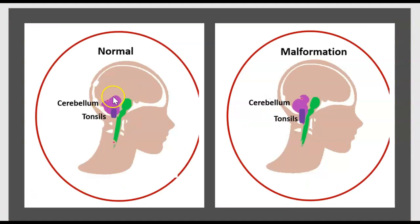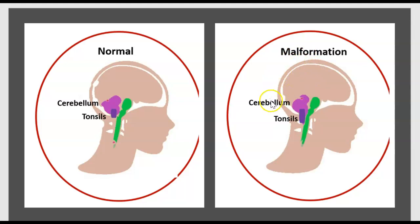Here is a normal cerebellum and a normal tonsil. And here there is malformation — the descending downward displacement of the tonsil.